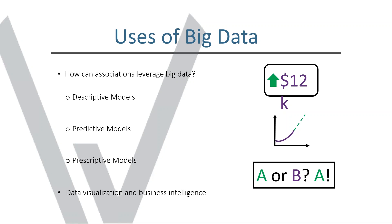Prescriptive models try to tell you what the best decision to make is — what to do. For example, if you really want to maximize your revenue, you should take this step. Another example of a prescriptive model driven by big data that many of us are familiar with are Netflix recommendations. Netflix has put a lot into tracking what kind of data its viewers are accumulating on its platform and using that to suggest movies or TV shows based on sophisticated models: people like this tend to also like these other things.